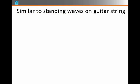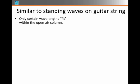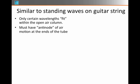So the air column is similar to guitar strings in the following sense. Only certain wavelengths will fit in the open air column. But the restrictions are somewhat different in nature. In this case, we have to have an antinode of air motion at the ends of the tube, because there's large motion of the air particles that's possible in an open end of a tube.